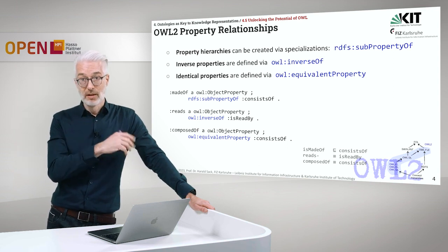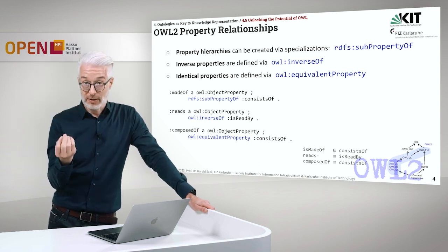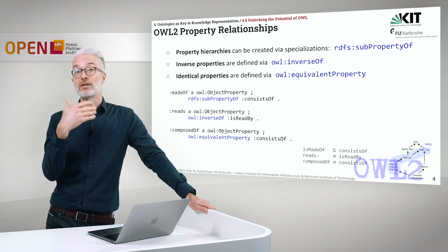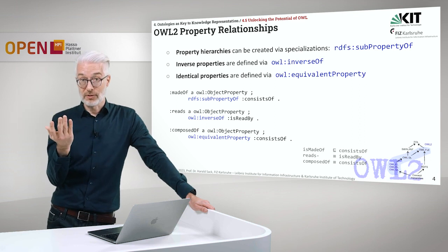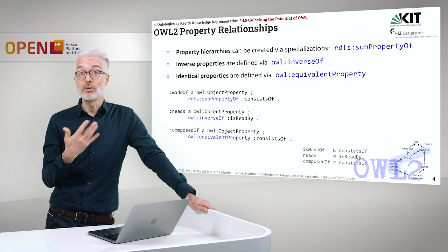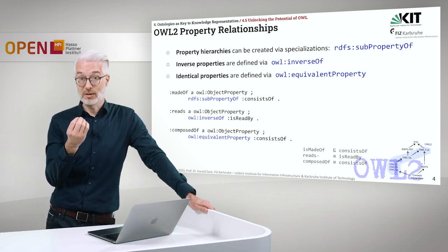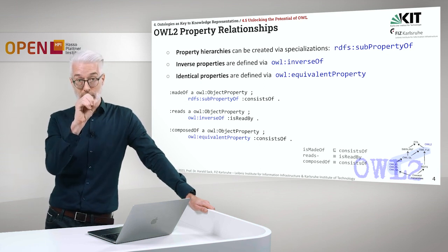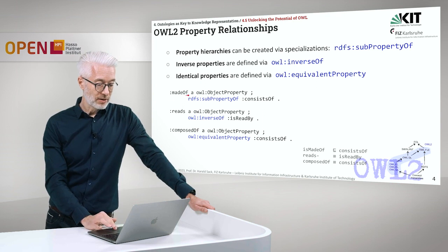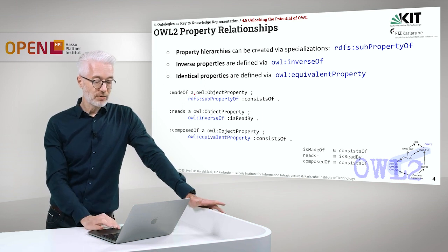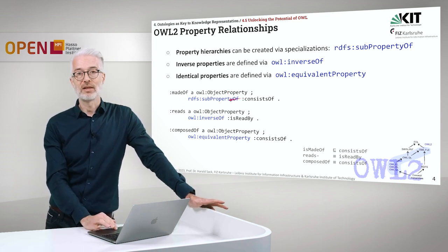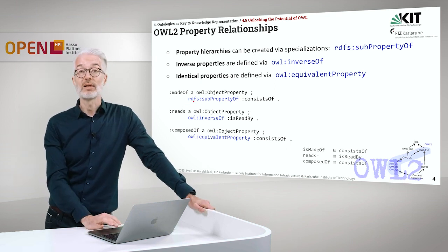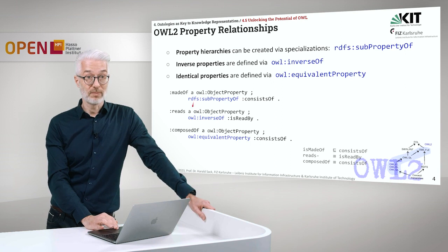Why do we have to do that? You might remember that we have the open world assumption, and this means we have to explicitly state the equivalence or the difference of things, because we cannot deduce it automatically. It has to be stated explicitly because we are living in an open world. We have here 'made of' as an object property, defined to be a subproperty of 'consists of' — as easy as that with RDFS subproperty.